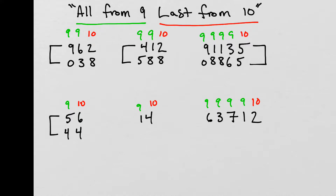Problem 5: 9 minus 1 gives us 8, and 10 minus 4 gives us 6. These numbers are complements. Last problem: 9 minus 6 gives us 3, 9 minus 3 gives us 6, 9 minus 7 is 2, 9 minus 1 is 8, and 10 minus 2 is 8. These two numbers are complements of each other.